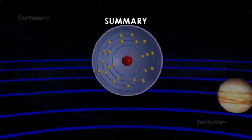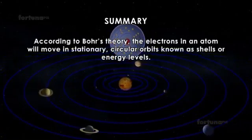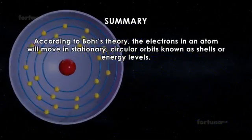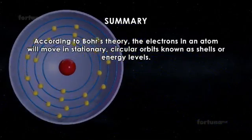Summary: According to Bohr's theory, the electrons in an atom will move in stationary circular orbits known as shells or energy levels.